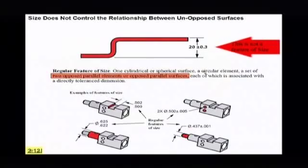I highlighted here what a regular feature of size is. One cylindrical or spherical surface, a cylindrical element, a set of two opposed parallel elements or opposed parallel surfaces. You see they're not opposed from one another. That means that if I'm going to check this, this is not really something I could check with calipers. How would I do that for a micrometer? You see how I can't really pinch that?